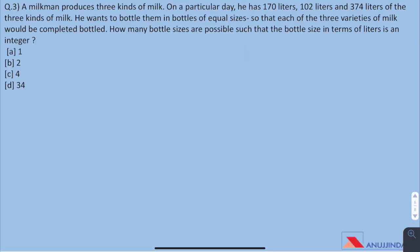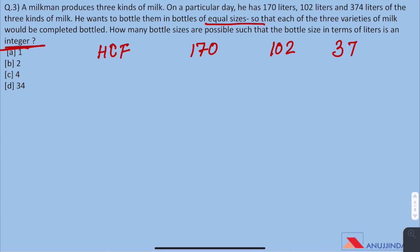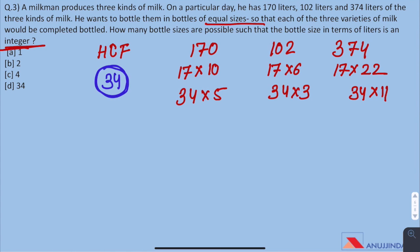Question 3: A milkman produces 3 kinds of milk. On a particular day, he has 170 liters, 102 liters and 374 liters of the 3 kinds of milk. He wants to bottle them in bottles of equal sizes so that each of the 3 varieties of milk will be completely bottled. How many bottle sizes are possible such that the bottle size in terms of liter is an integer. As per the question, we have to find the HCF of 170, 102, 374. As we can see 17 is the factor which is present in all 3 of these numbers. Further simplifying, we see that 34 is the HCF. On finding the factors of 34, we get 1, 2, 17 and 34 itself. There are 4 possible bottle sizes.